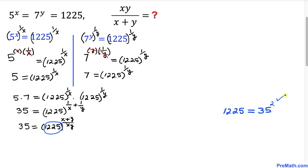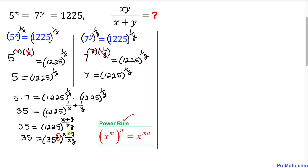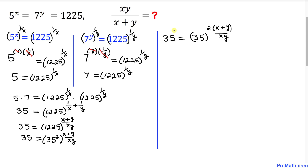Now, 1225 can be written as 35 squared, so we get 35 equals 35 squared, raised to the power (x plus y) divided by xy. Using the power rule to multiply these nested exponents, this becomes 35 equals 35 power (2 times (x plus y) divided by xy). On the left hand side, 35 can be written as 35 to the power 1. Since both sides have the same base 35, we can equate the exponents.